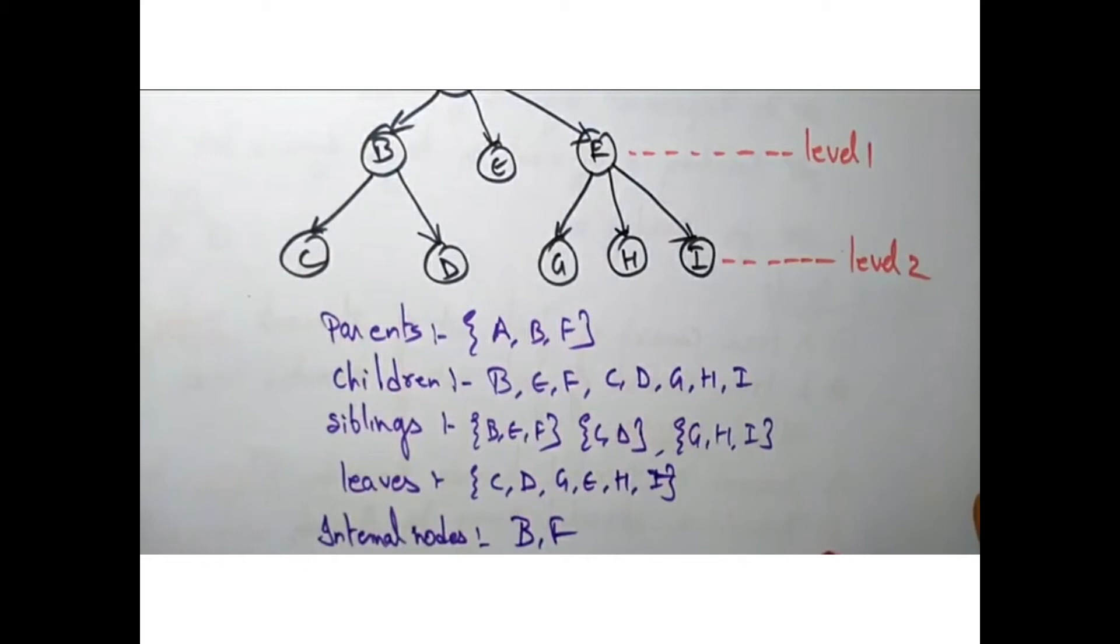Here we can draw the binary tree like this, and we can see here the circles are called nodes and edges are called links.